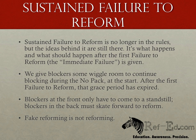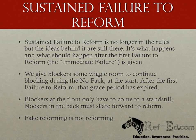The blockers from the front are only required to come to a standstill. If those blockers at the front are at a standstill, you should be looking to the blockers in the back for not speeding up enough to reform the pack. If the blockers at the front aren't slowing down enough or are still engaging opponents, issue them penalties for sustained failure to reform. But you should also keep looking at the back to make sure they're not engaging opponents either.